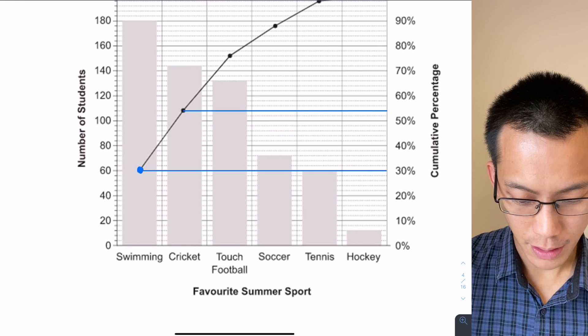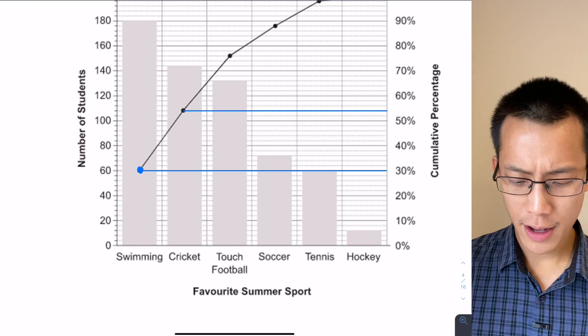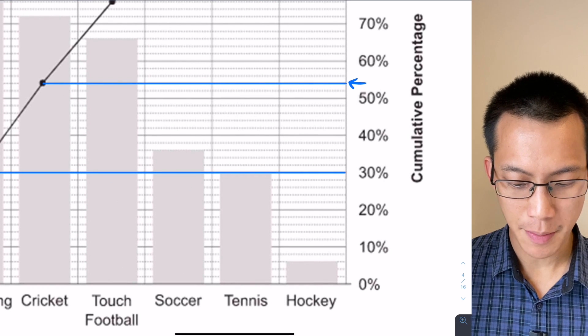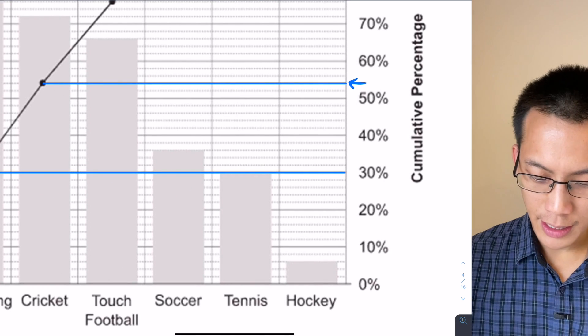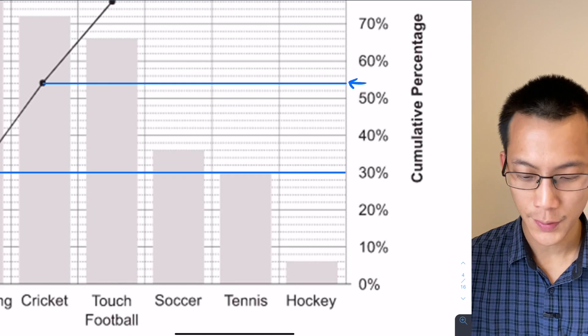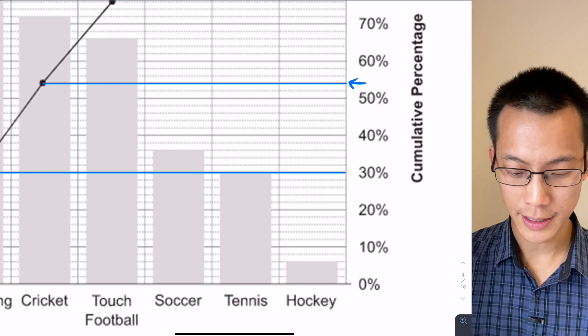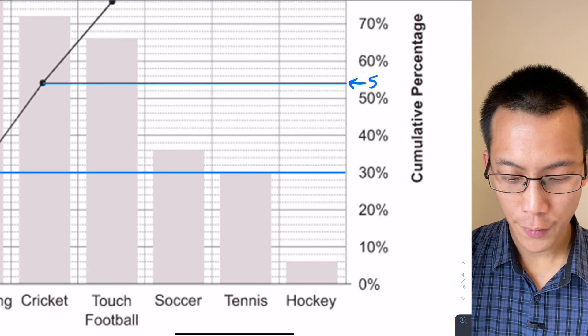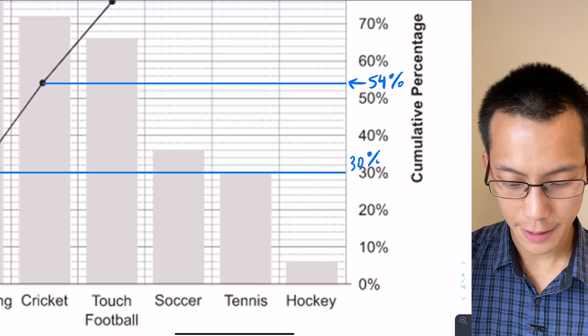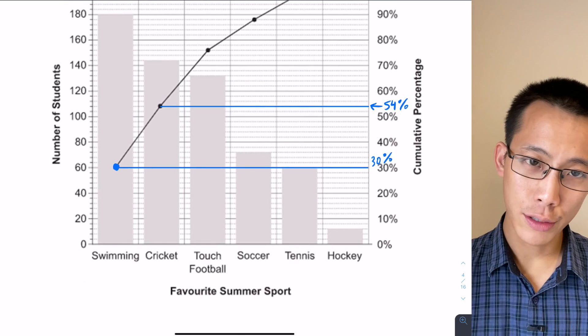There we go. So what part of the percentage axis does this meet up to? Well, 50 and 60, there's again four marks in between, so it's going to go up in twos here: 52, 54, 56, 58, up to 60. So that makes this one 54%.